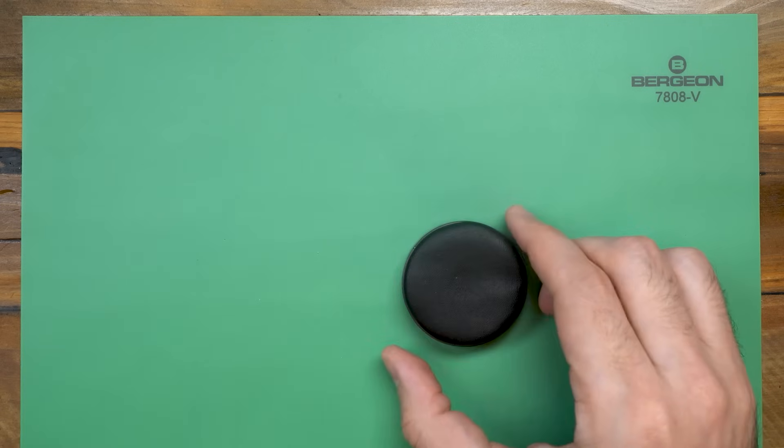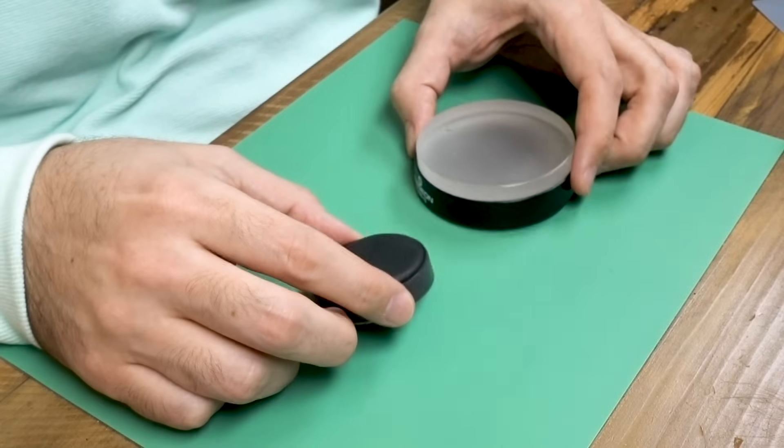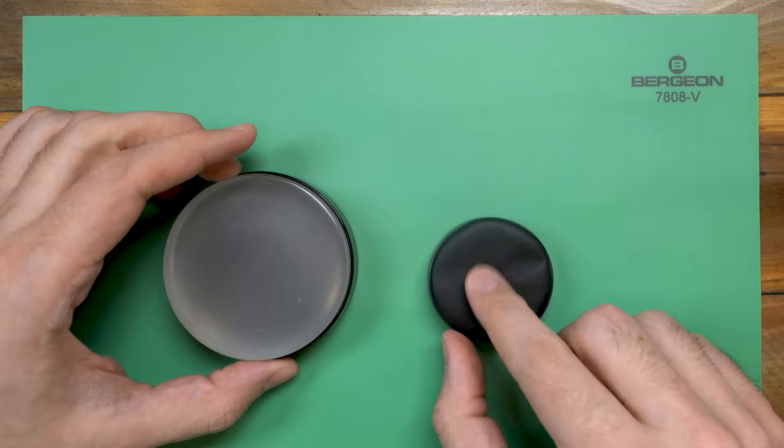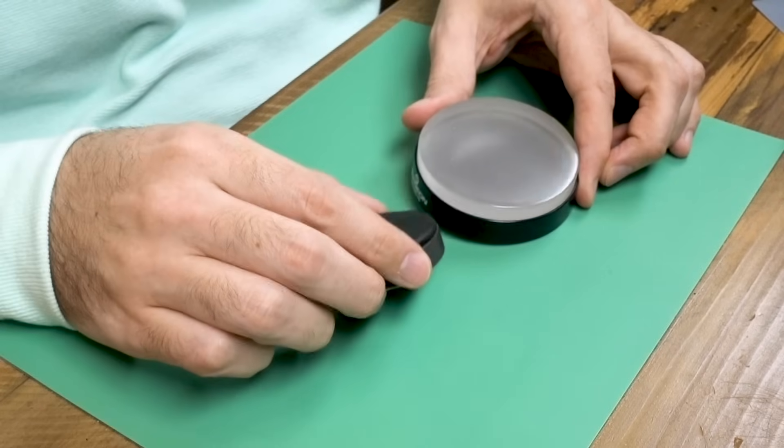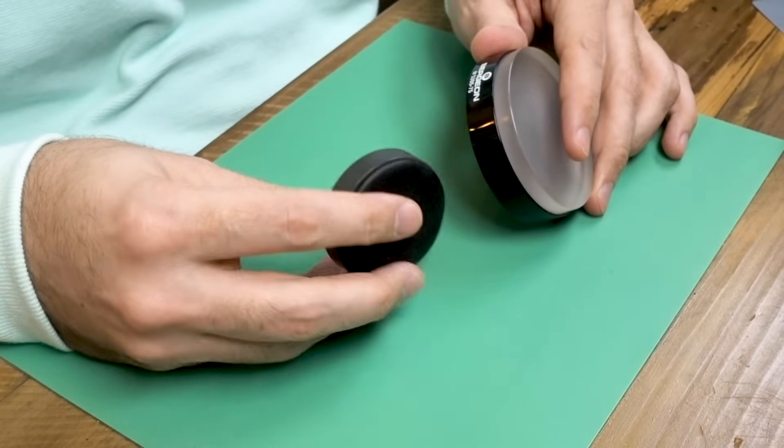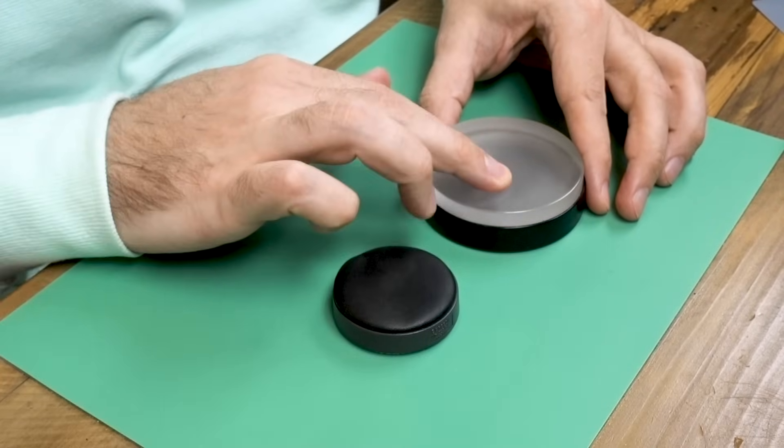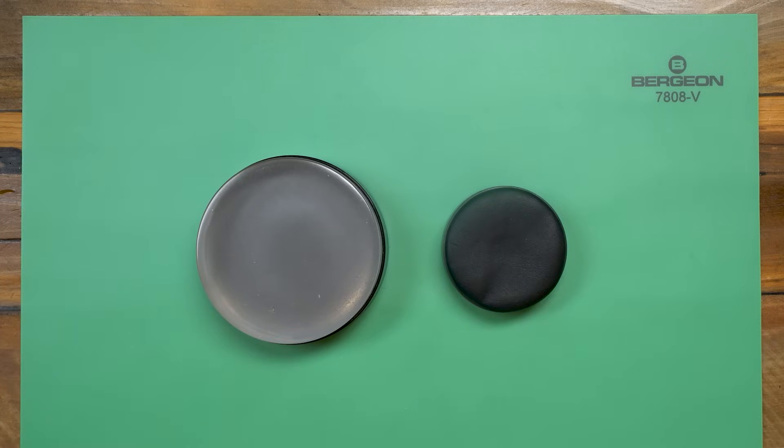You'll also want to get a casing cushion to lay the movement on while you're casing it, putting on the hands, or just need to set it down for a minute. They come in a few varieties like leather and gel cushion, but most any will do. A nice Bergeon one will go for somewhere between twenty nine and thirty six dollars and the generic ones are about nine bucks. This is a good place to get the generic one if you're on a budget as all they're really doing is providing a soft place to set down the movement.